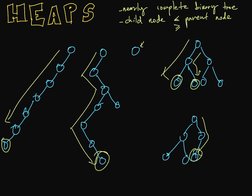Welcome to our 14th video on data structures and algorithms, and we're going to talk about heaps. A heap is a nearly complete binary tree where each child node is less than or equal to its parent node, or greater than or equal to its parent node, giving us a max or min heap. When we employ these kinds of constraints on a tree, we get these nice short trees.